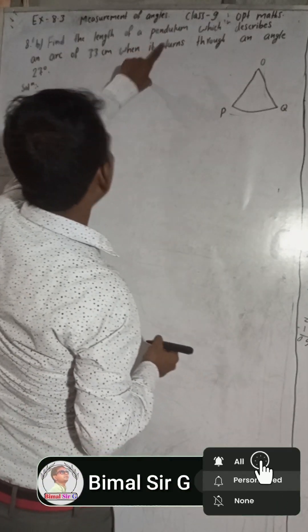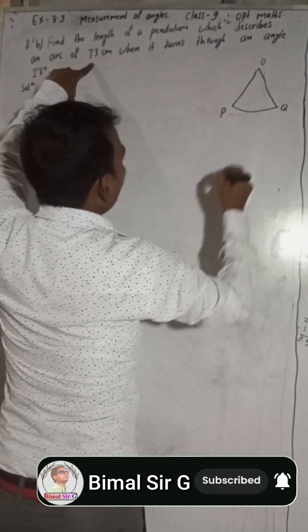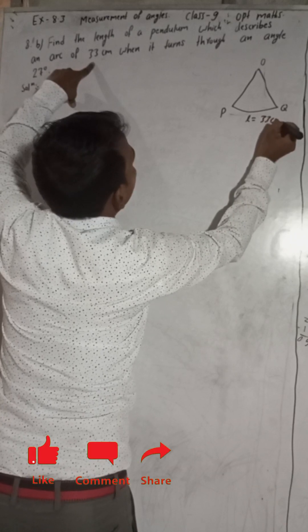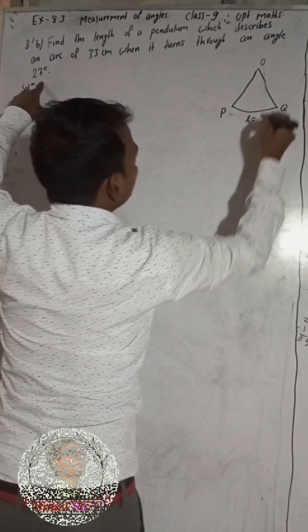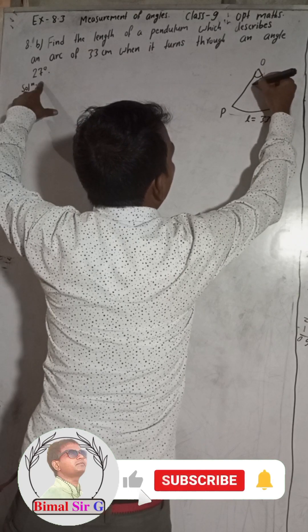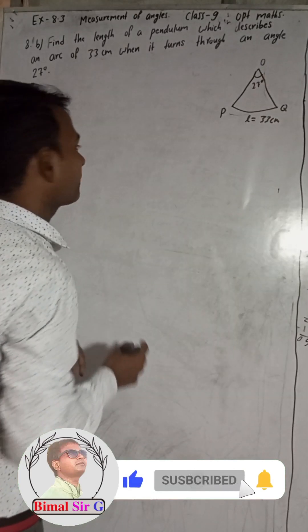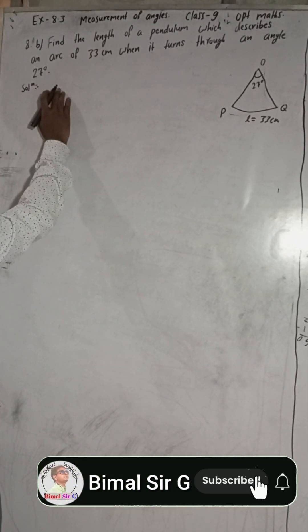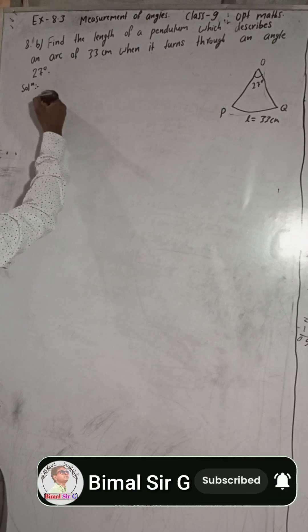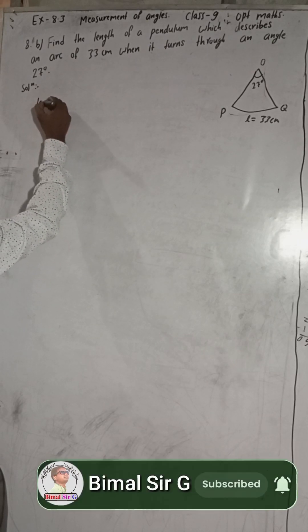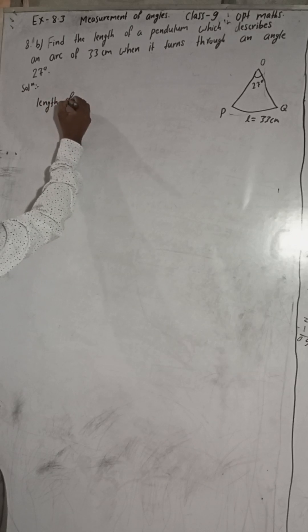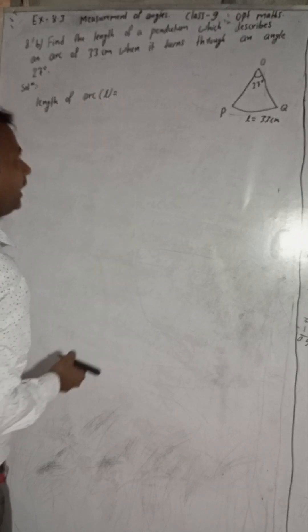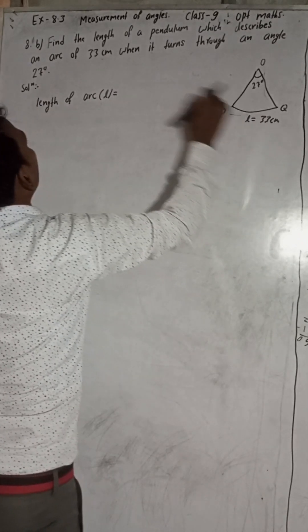Now the length of the pendulum which describes an arc. The arc, this is the arc. Arc length is L. This is 33 cm. Now we have to write the given. The length of arc is equal to 33 cm.